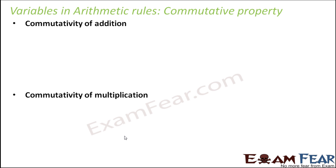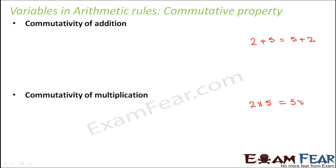When you talk about commutative property, it exists for both addition as well as multiplication. For numbers, let's say you have two numbers, 2 and 5. So 2 plus 5 will be equal to 5 plus 2. If you find their sum, you would see that in both cases the sum is 7. It doesn't matter what is the order of the two numbers — their sum would always remain the same. Similarly, commutativity for multiplication would be 2 into 5 is equal to 5 into 2. The order doesn't matter; the product of two numbers would always remain the same.